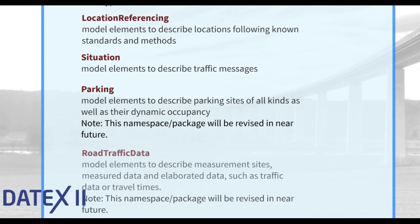Road traffic data covers measurement sites, measured values, and elaborated data. This comprises traffic data like speed values, but also all other kinds of mass data, up to road weather related data. Note that this package might also affect changes in the near future.